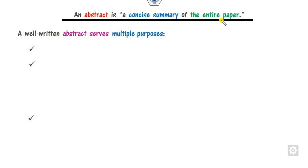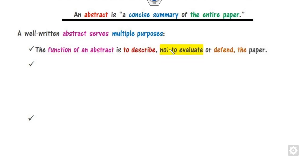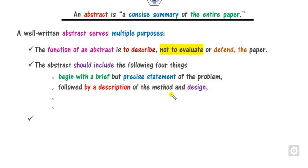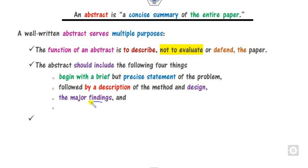A well-written abstract will serve the following purposes. The function of the abstract is to describe — the most important thing is to describe, not to evaluate or defend the paper. Whatever you have written in your research paper, only describe those things in the abstract, not evaluate. When writing the abstract, you have to work on four things: firstly, write a brief about the key findings or the problem statement; followed by your description of whatever method you used; followed by the major findings and results; and finally, the conclusion you reached. These are the four steps to follow.